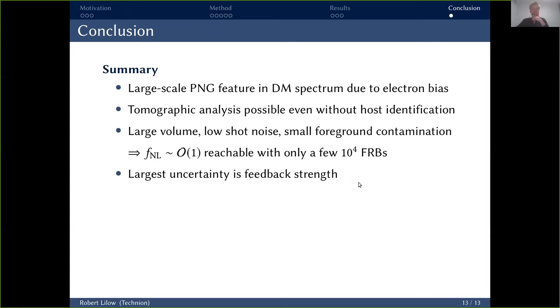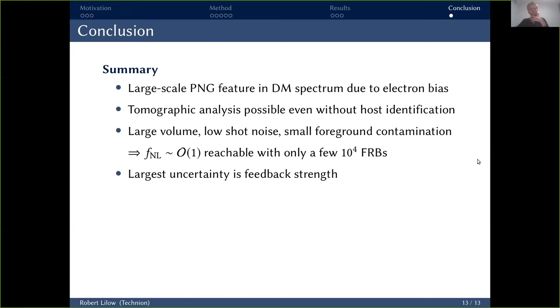Lastly, the largest uncertainty on this forecast is the feedback strength. So one of the things that can be done in the future is to avoid the estimate of the feedback strength altogether and rather directly measure the electron bias by cross-correlating the dispersion measure signal with lensing, because this is a measure of total matter fluctuations. But in any case, given the results of our forecast, we can conclude that FRBs are definitely a very promising and competitive tool to test inflationary models of the early universe in the near future. And as a nice addition, they have very complementary systematics compared to other methods like galaxy clustering. All right, thank you.